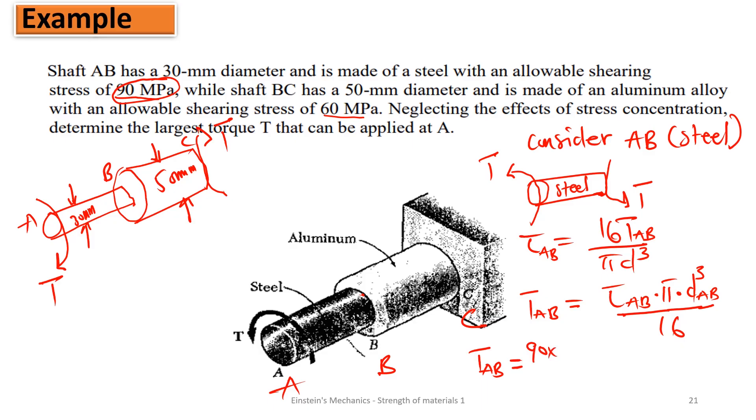So meaning torque applied at AB is going to be, what is the shear stress in AB? The allowable is 90 megapascal. So let's do it. 90 mega, which is 10 to the power of 6, multiplying the pi, multiplying the diameter. The diameter in AB is 30. So since we are working in meters, that is going to be 0.03 cube on 16. So here, our torque in AB, or the torque applied, that is going to be 477.1 newton meter.